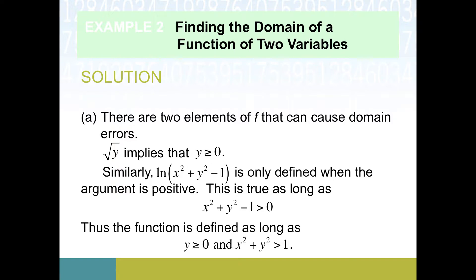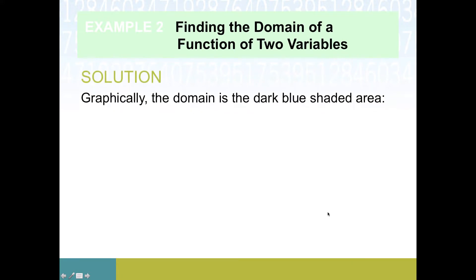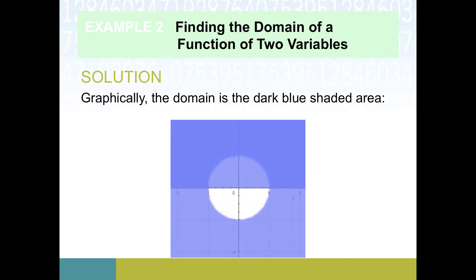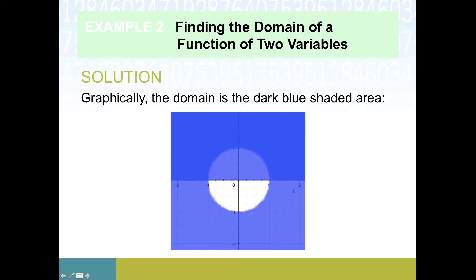This is the main difference when thinking about a function of two variables. With a function of one variable we only have something in x to worry about, so the domain would just be an interval of real numbers. Now that we're looking at functions of two variables, it's combinations of x's and y's that form the input, and when we try to depict a domain it's no longer just an interval — instead we get something in the plane.